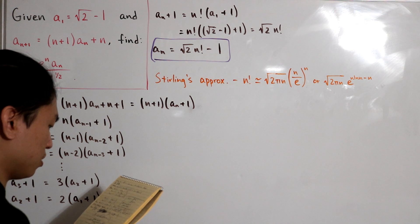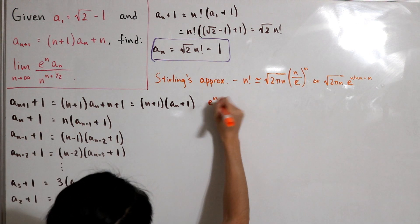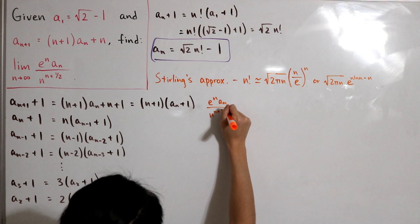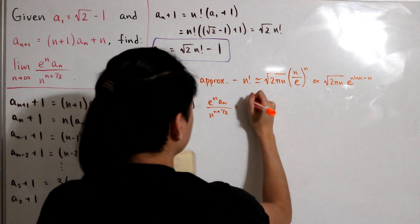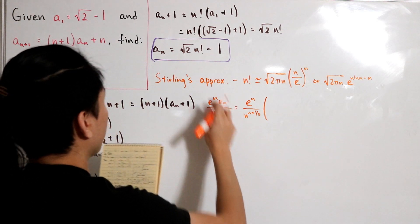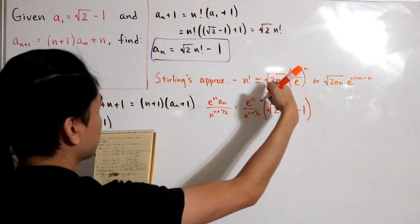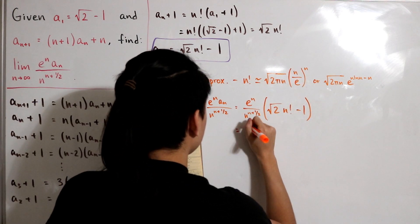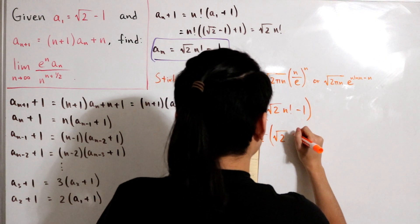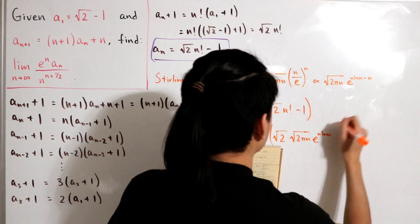Let's compute the limit. Rather than worrying about the limit sign immediately, let's focus on the function we're taking the limit of: e to the n times a sub n, divided by n to the power n plus one half. We substitute our formula for a sub n: this becomes e to the n over n to the (n + 1/2), times (√2 times n! minus 1). We then replace n! using Stirling's approximation, giving √2 times √(2πn) times e to the (n·ln n − n), minus 1.